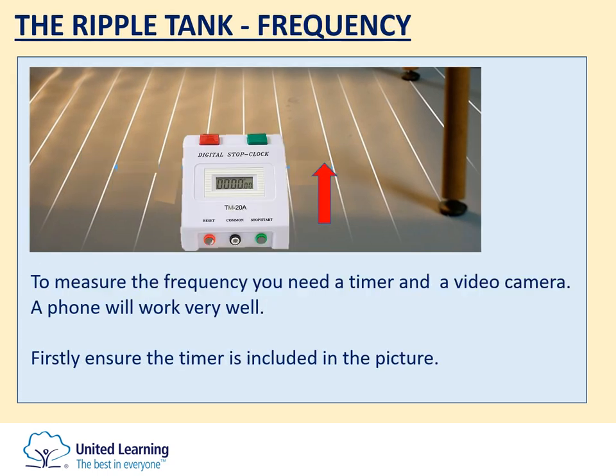Moving on to calculate the frequency — the frequency is a little more tricky because the wavefronts are generally moving very rapidly, usually a little too fast for the eye to see. They can be adjusted to a relatively low value, but that can sometimes cause the vibrating bar to stop moving, so we always need to keep it at a reasonably fast speed. However, we can use your mobile phone and the video camera function for this.